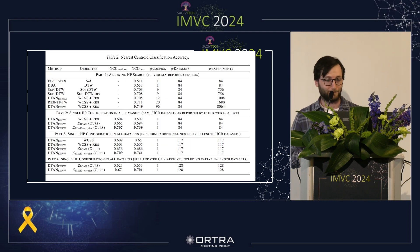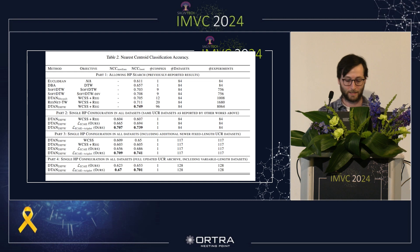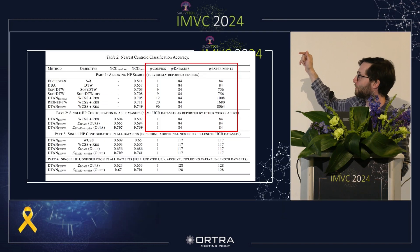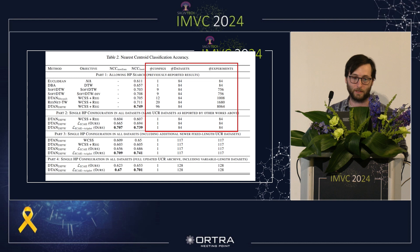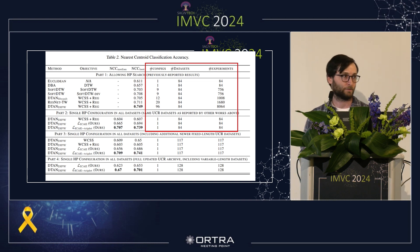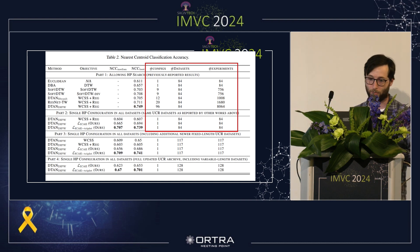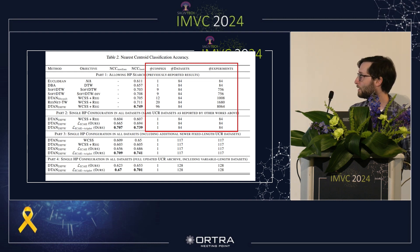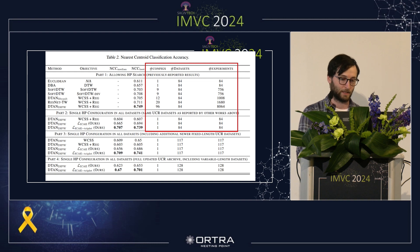This is the main results table — our method is shown in bold. Notably, the competing methods on the first block were evaluated on 84 datasets, and the best method used 96 configurations, resulting in about 8,000 experiments to find the best configuration. In stark contrast, we only used one configuration and achieved comparable results. We also support variable-length inputs, as shown at the beginning.